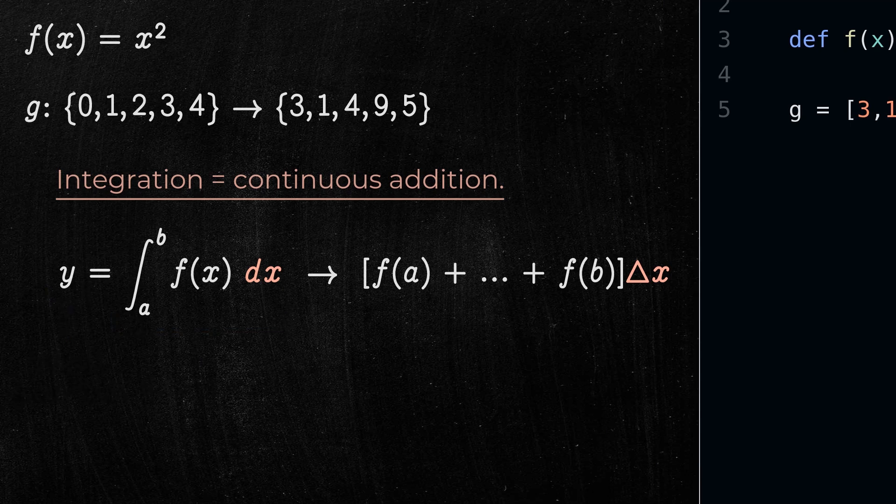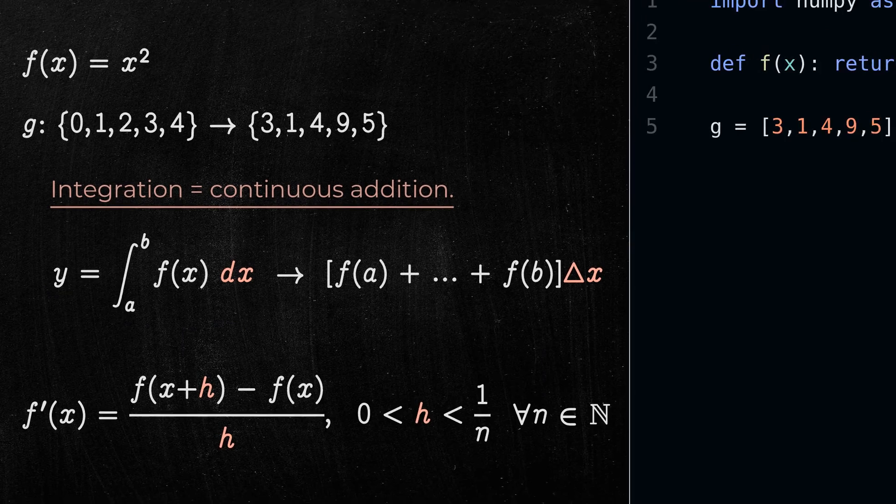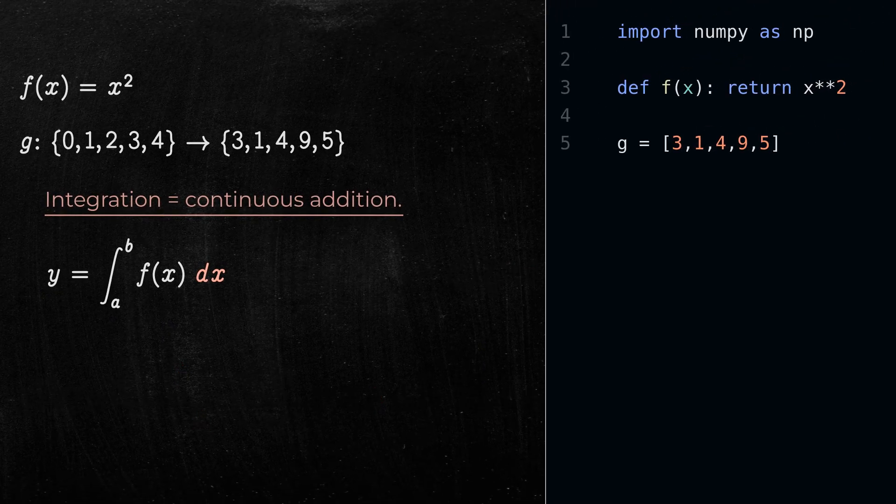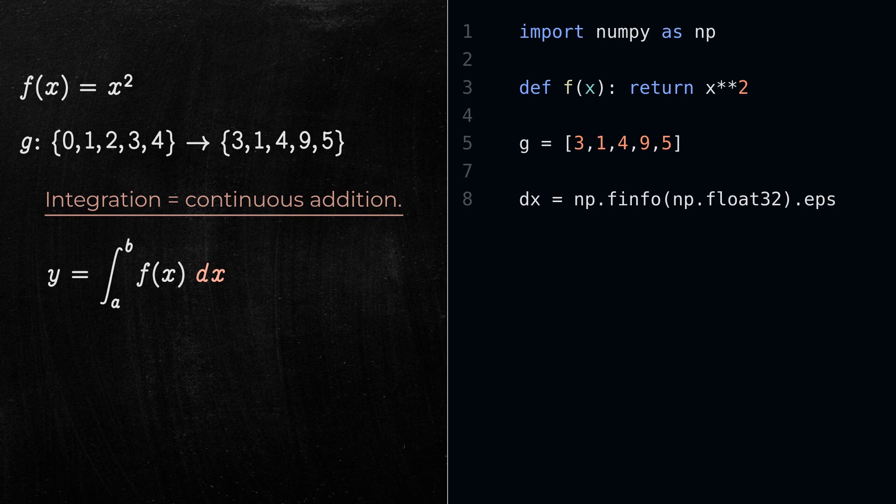So, similar to the variable h in the definition of derivatives, dx can be thought of as a very small positive number. So let's declare that dx is also equal to the machine epsilon. Now, we can write the integral of a function in this way.